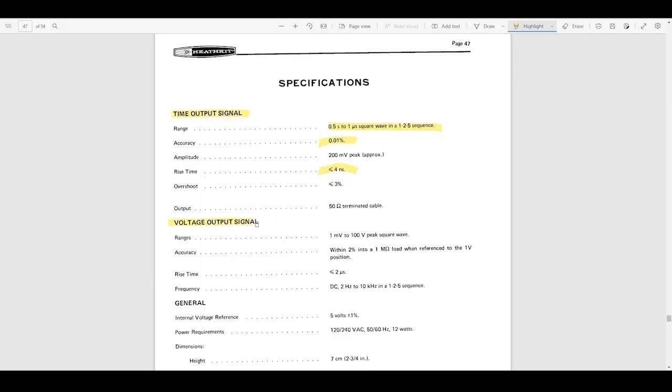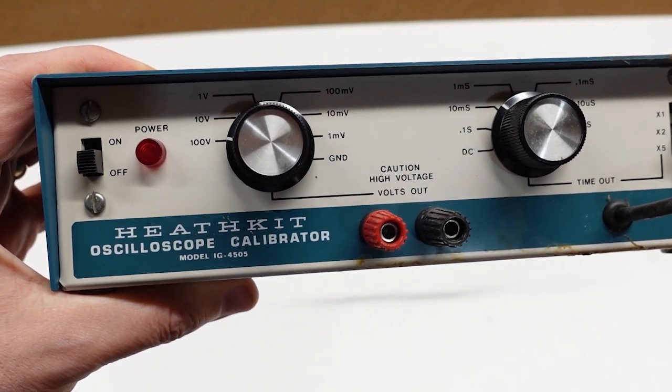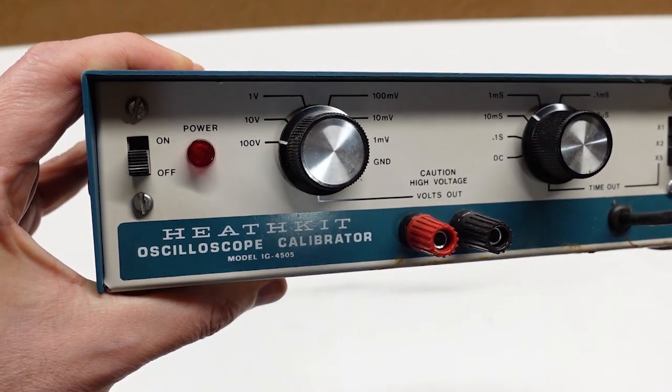The second output signal is also an adjustable frequency square wave, but has a lower total range and adds an independently adjustable amplitude in six decade steps from 1 millivolt to 100 volts. A seventh position allows DC output. The specified accuracy of this output is 2% for the voltage, but has a much higher rise time at 2 microseconds maximum. And this output is provided via a very typical pair of five-way binding posts on the front panel.